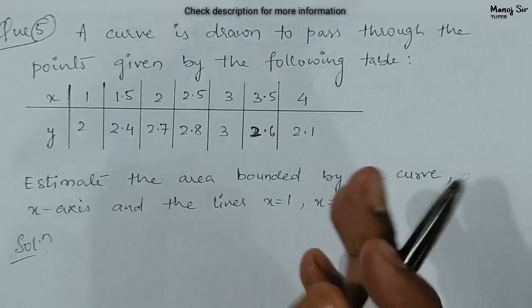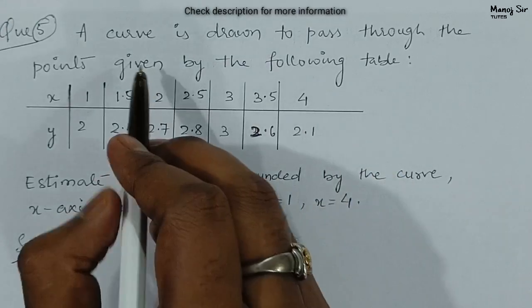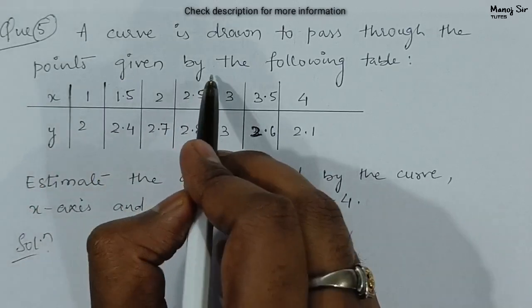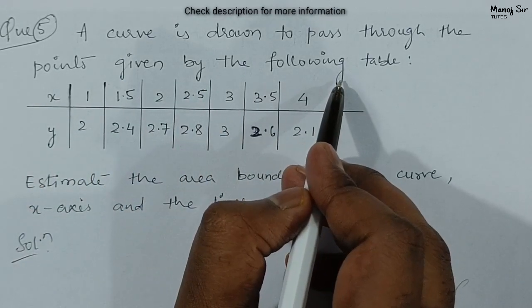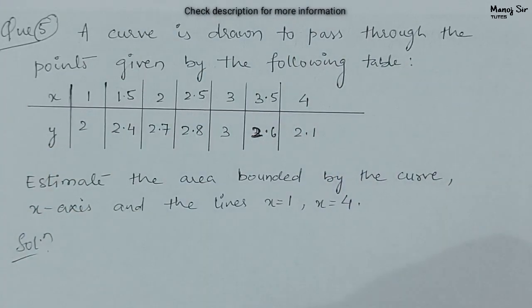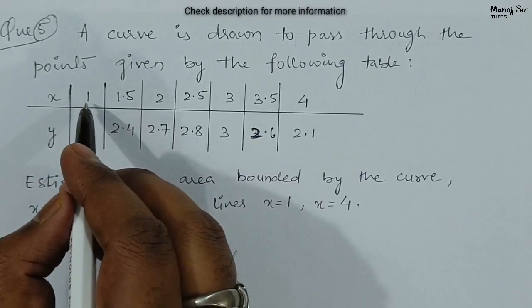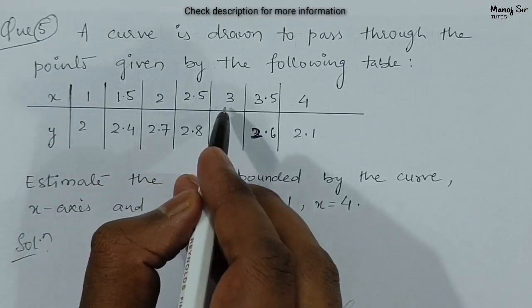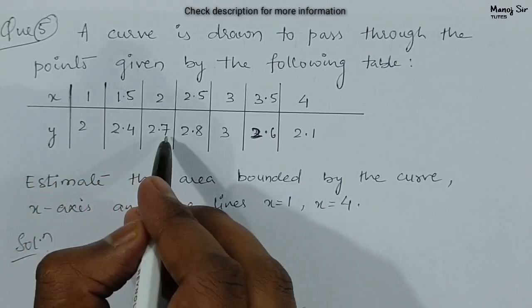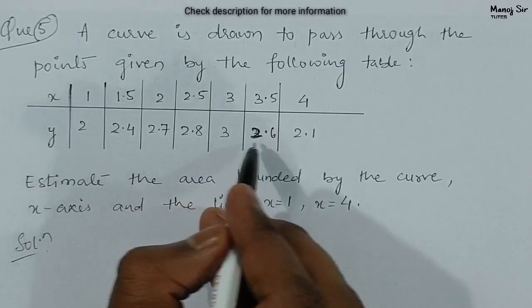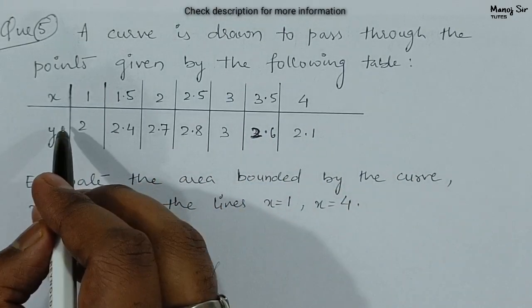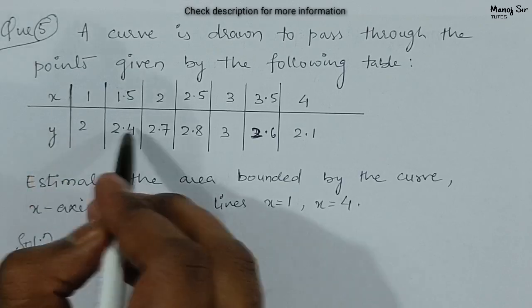Let us start with the problem. A curve is drawn to pass through points given by the following table. The values of x are 1, 1.5, 2, 2.5, 3, 3.5, and 4. The corresponding values of y are 2, 2.4, 2.7, 2.8, 3, 2.6, and 2.1.